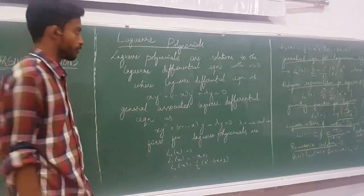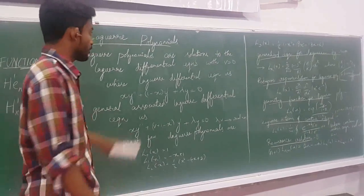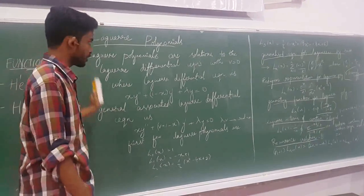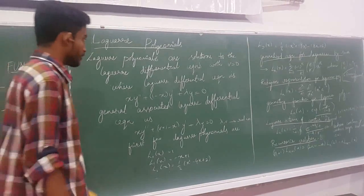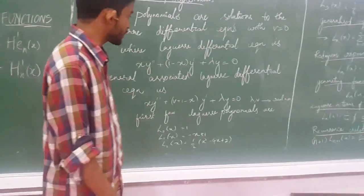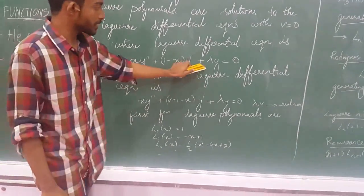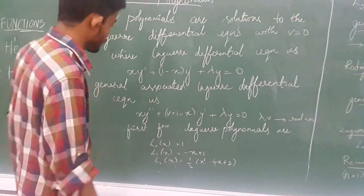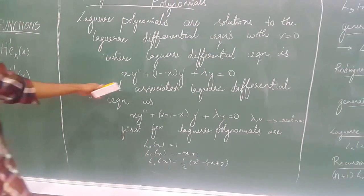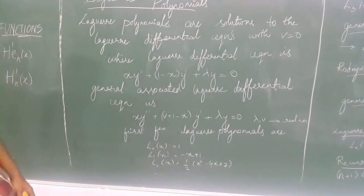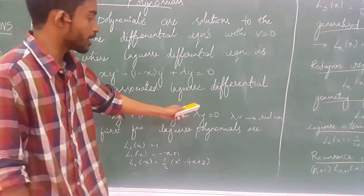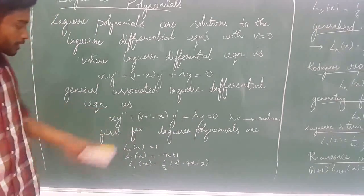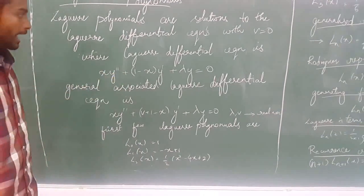Now let us learn Laguerre polynomials. Laguerre polynomials are the solutions to the Laguerre differential equation with v = 0, where the Laguerre differential equation is: x·y'' + (1 - x)·y' + λy = 0. The general associated Laguerre differential equation is: x·y'' + (v + 1 - x)·y' + λy = 0. On substituting v = 0, you get the Laguerre differential equation.